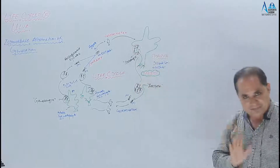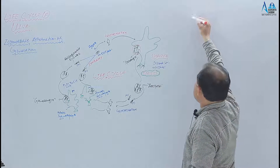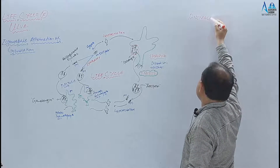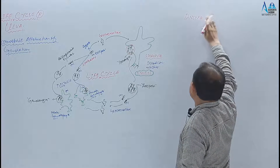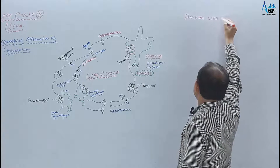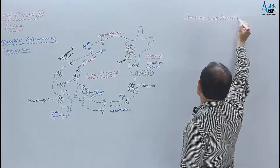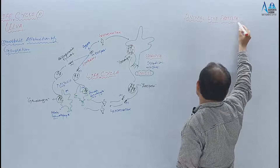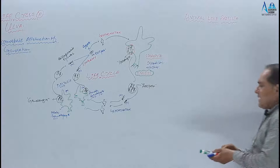Yeh tha brief about plant-like protista — yaani algae — jisme humne Chlorella aur multicellular Ulva ko discuss kiya, inki structures dekhi, sexual aur asexual cycles dekhe. Ab hum baat karenge animal-like protista ke baare mein.